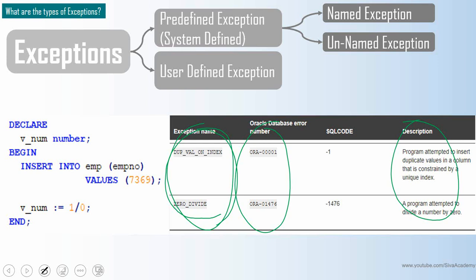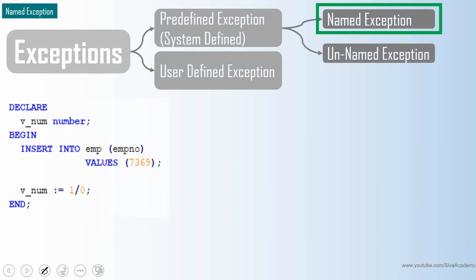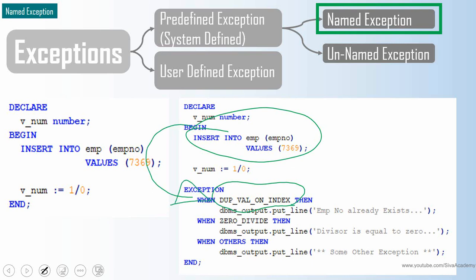Here is the same program showing how to handle named exceptions. In the exception handling section, we specify WHEN DUP_VAL_ON_INDEX — whenever the INSERT fails, control goes to the exception block and the program terminates gracefully. If the INSERT succeeds but the division fails, it throws ZERO_DIVIDE, caught in the next WHEN clause. For any other exception not explicitly handled, control goes to the OTHERS block and the program terminates gracefully.